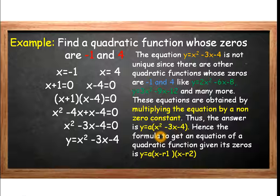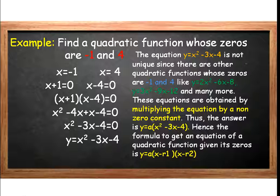Hence, the formula to get an equation of a quadratic function given its zeros is y is equal to a times the quantity x minus r1 multiplied by the quantity x minus r2, where a is any non-zero constant, and r1 and r2 are the given zeros of the function.